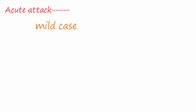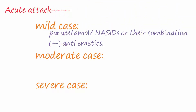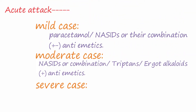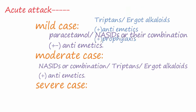How we can manage the acute attack of migraine? Mild case, moderate case, and severe case. In case of mild, we use paracetamol or antiemetics, non-steroidal anti-inflammatory drugs, or their combination with or without antiemetics. Moderate case of migraine, we use antiemetics or combination, or triptans or ergot alkaloids with antiemetics.